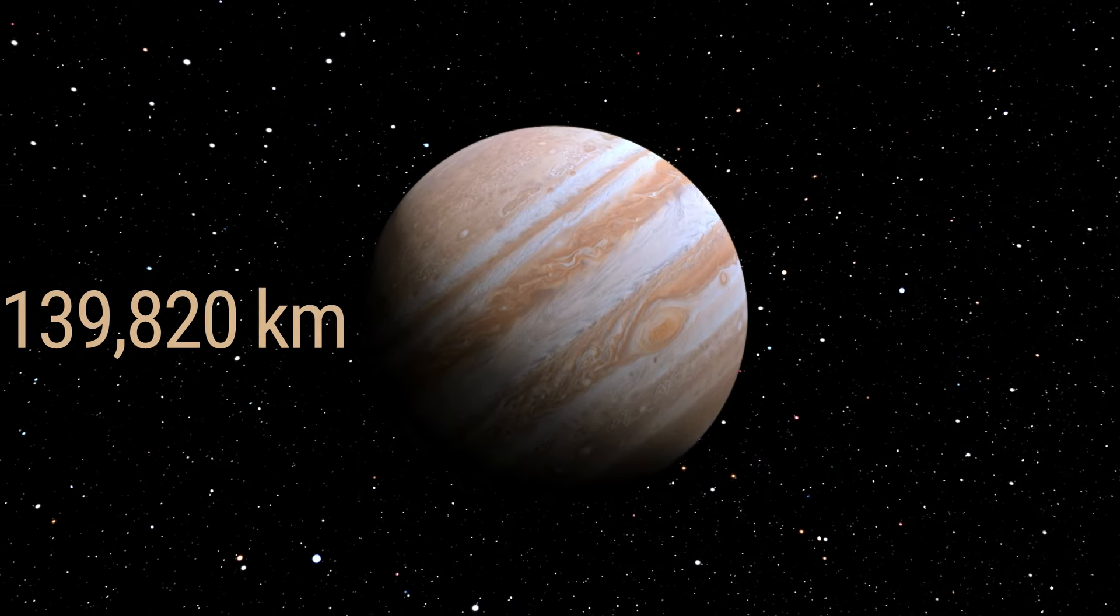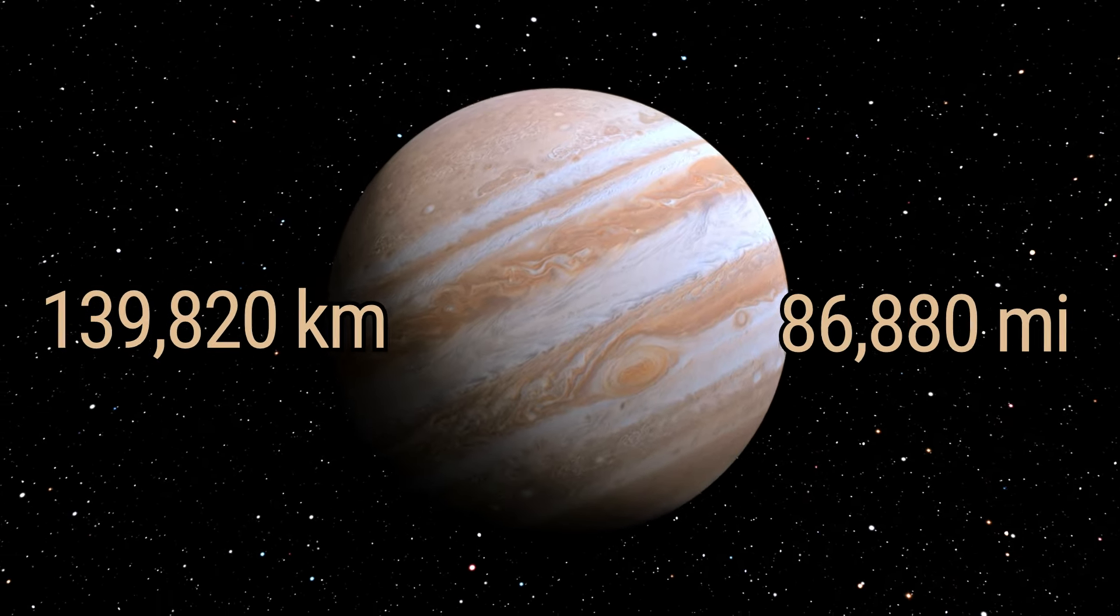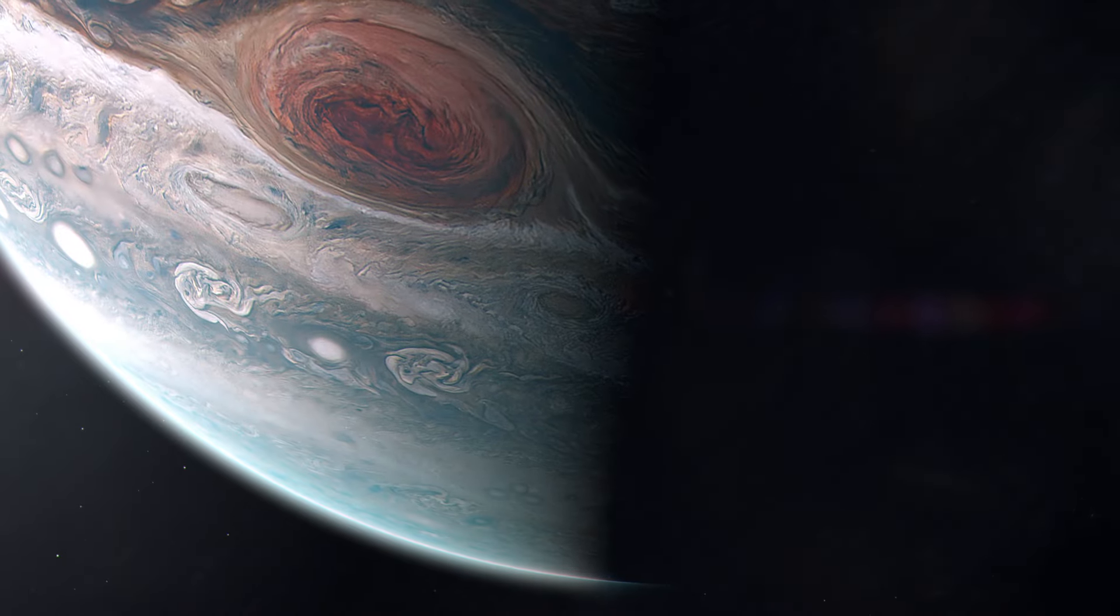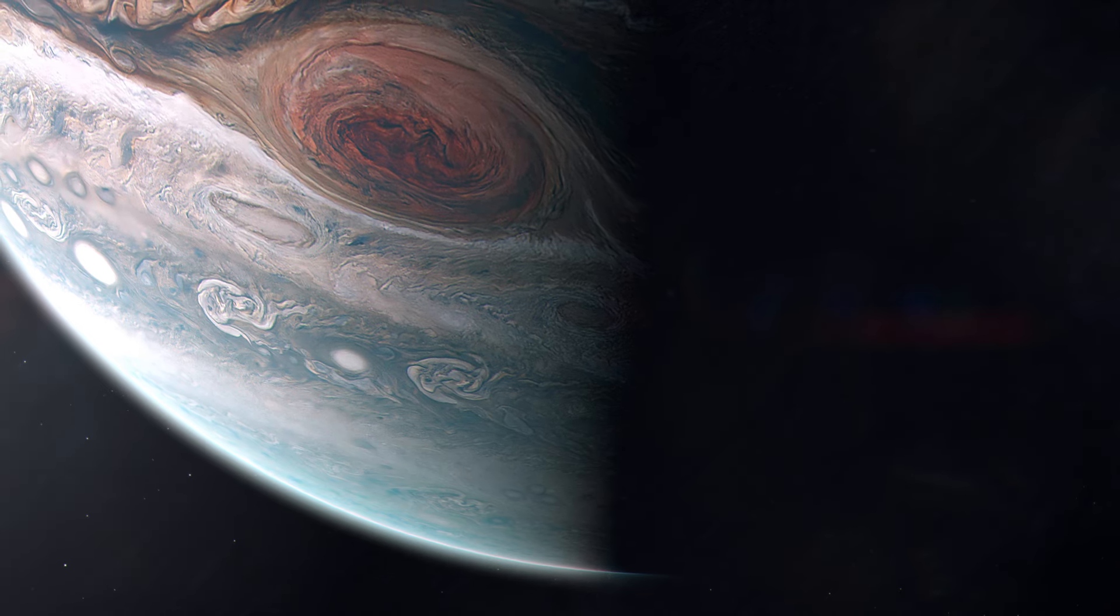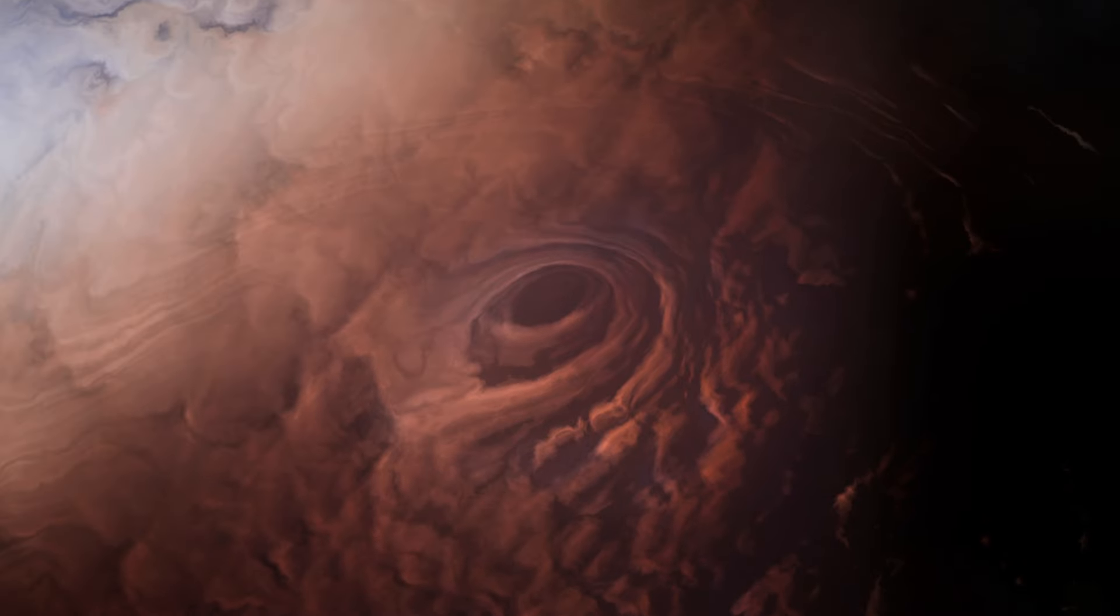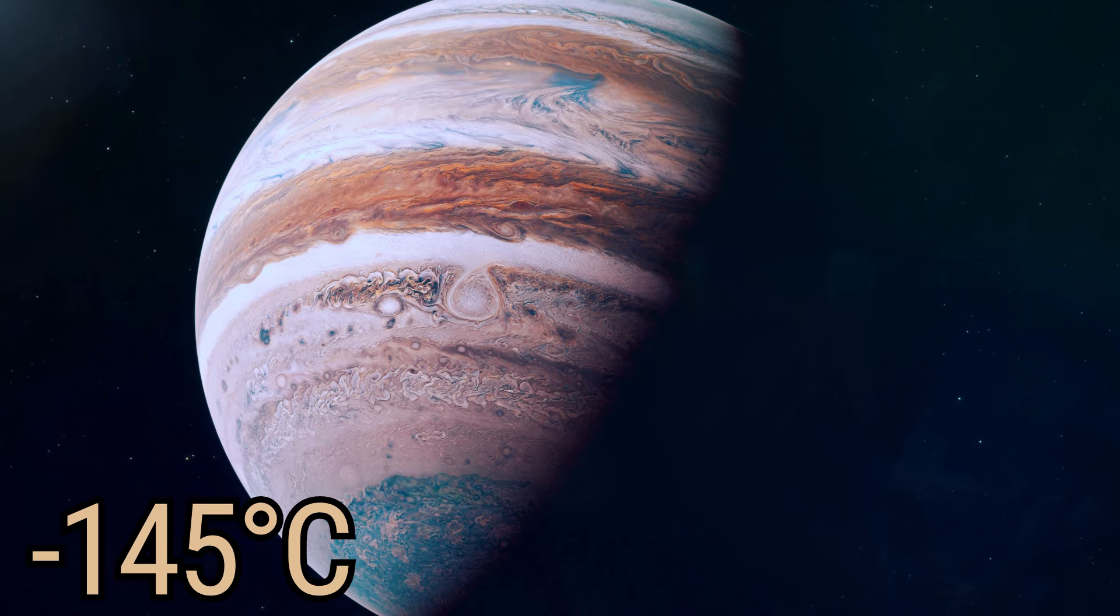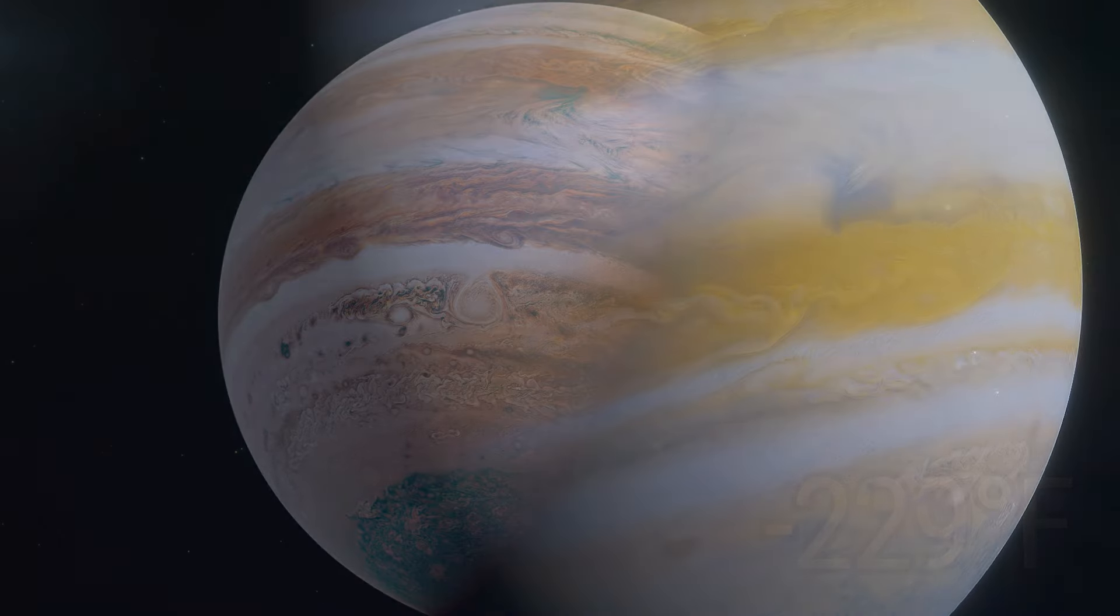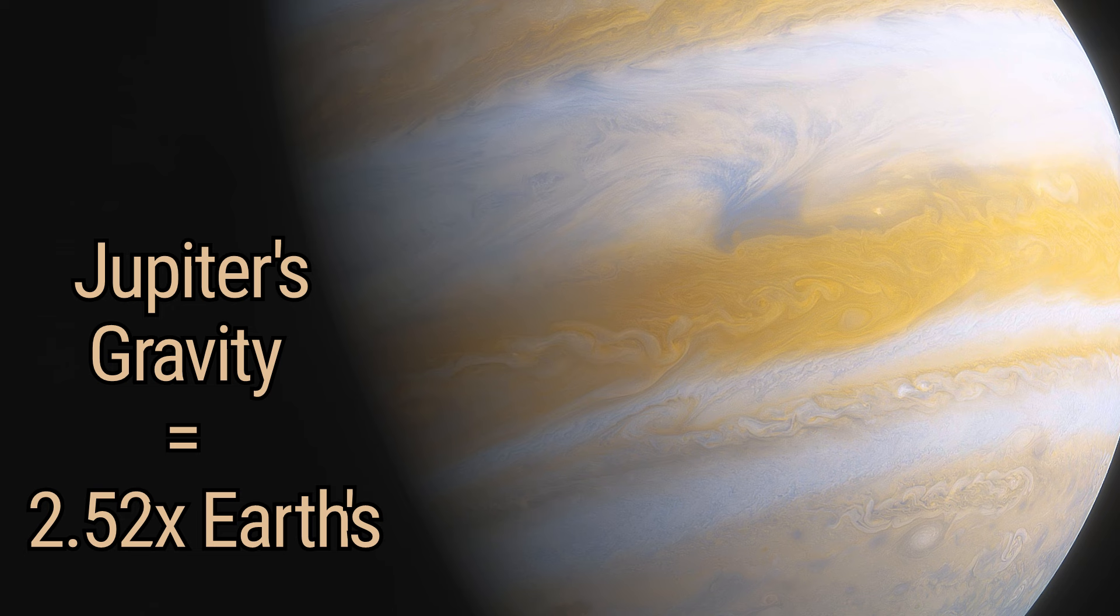Jupiter's diameter stretches 139,820 kilometers, or 86,880 miles across. Jupiter's atmosphere, a swirling tapestry of hydrogen and helium, is home to the Great Red Spot, a storm larger than Earth itself. The average temperature on Jupiter is around minus 145 degrees Celsius, or minus 229 degrees Fahrenheit.